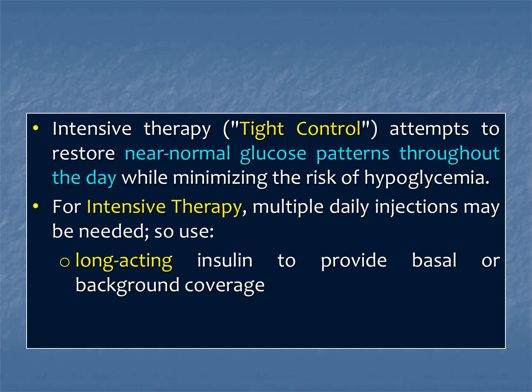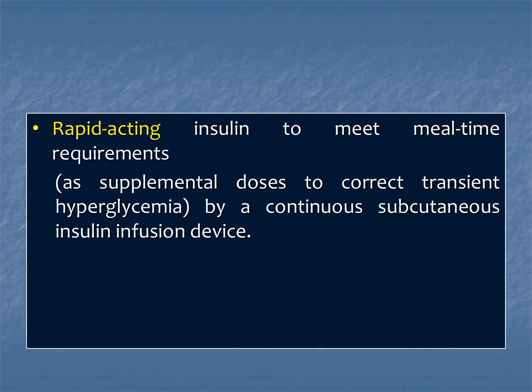For intensive therapy, we give multiple daily injections. We use long-acting insulin to provide basal or background insulin coverage. Apart from this, rapidly-acting insulin is given to meet mealtime requirements, because post-prandial rise in blood sugar level can only be controlled by rapid-acting insulin. These are given as supplemental doses to correct transient post-prandial hyperglycemia, usually via continuous subcutaneous insulin infusion devices.